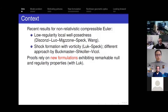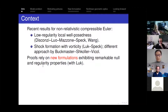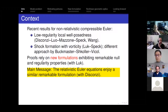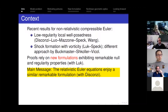These proofs — at least low-regularity results and the shock formation results I did with Jonathan — are not through a standard first-order formulation of the non-relativistic Euler equations. They are through a different formulation that exhibits some truly remarkable properties, both at the level of the null structure in the equations and at the level of the differentiability properties of the different kinds of solutions. The main message I have for you today is that the relativistic Euler equations enjoy a similar remarkable formulation. This is joint work with Disconzi, going back to late 2019.